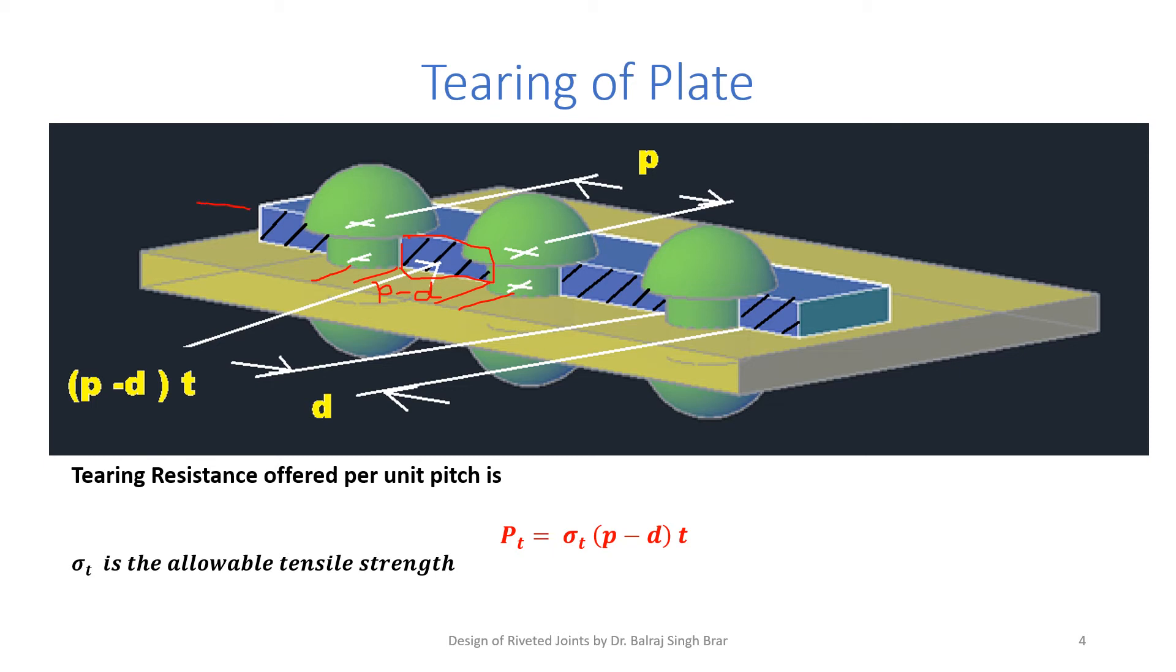So the area where the tearing is taking place per unit pitch is (P minus D) into T. So tearing resistance offered per unit pitch is this area multiplied by allowable tensile strength sigma T. So Pt is the resistance offered to tearing of plate, which is usually measured per unit pitch.